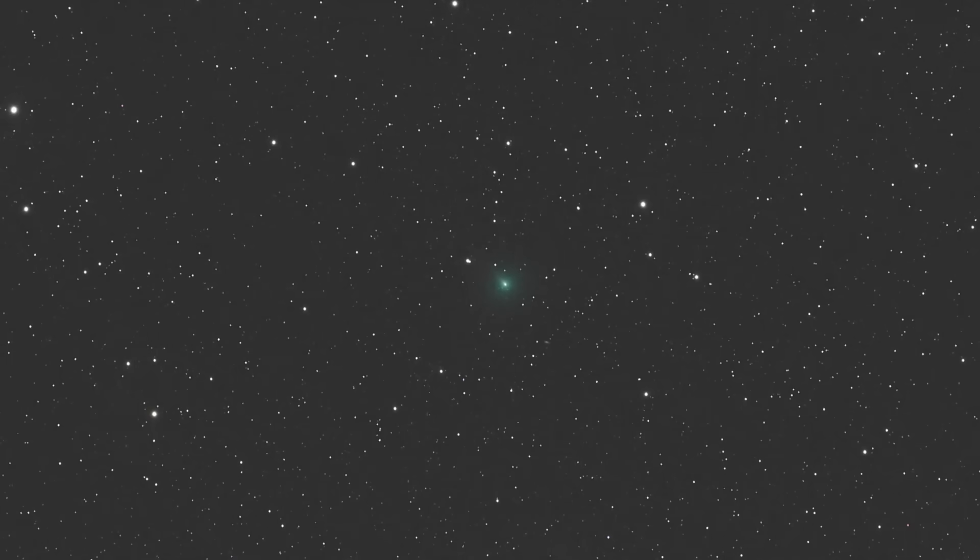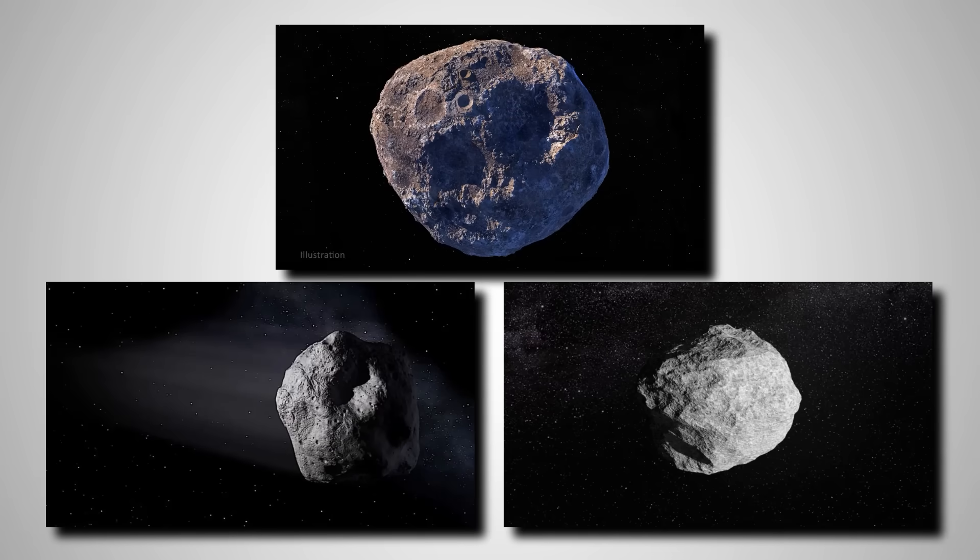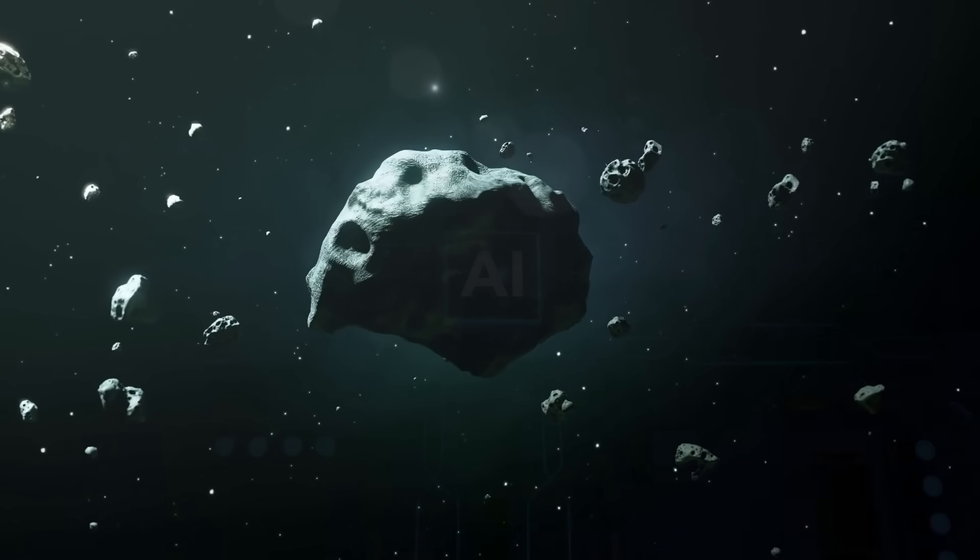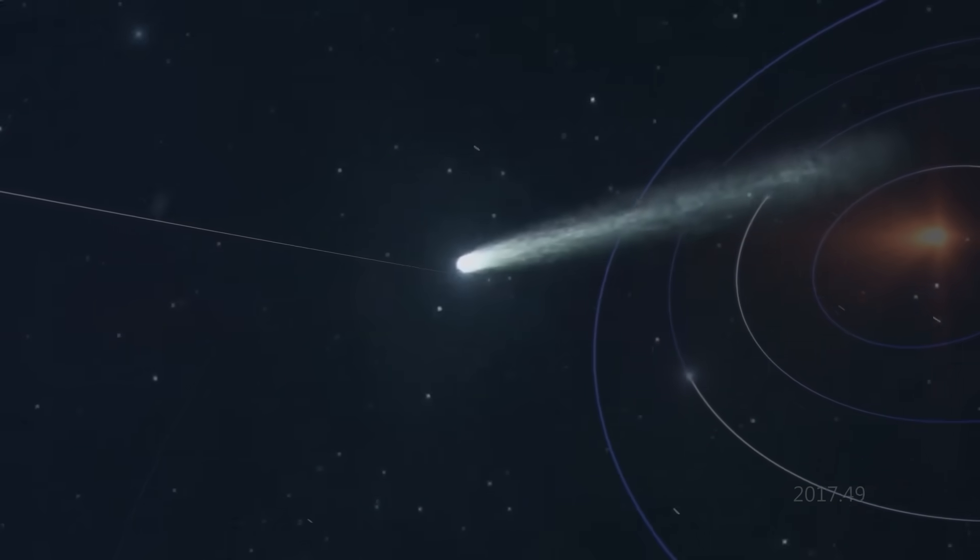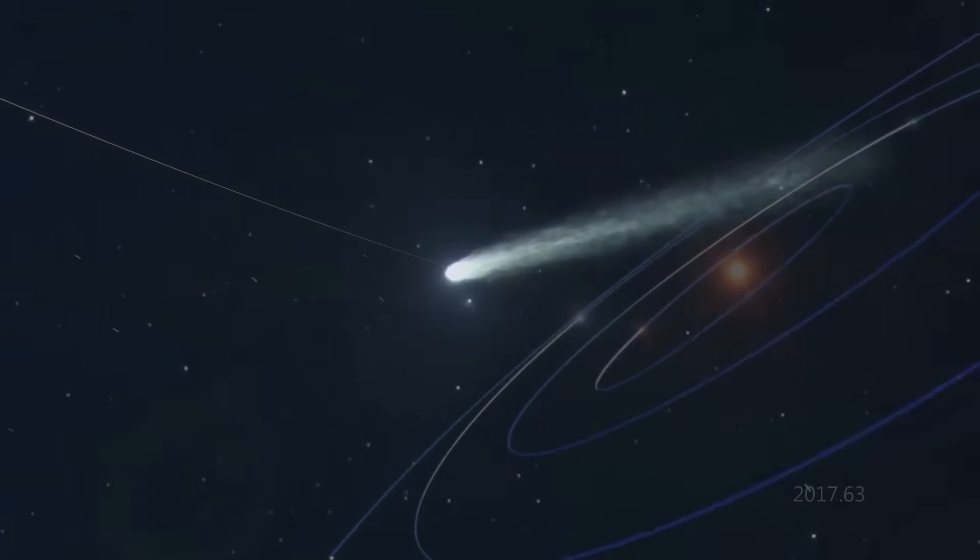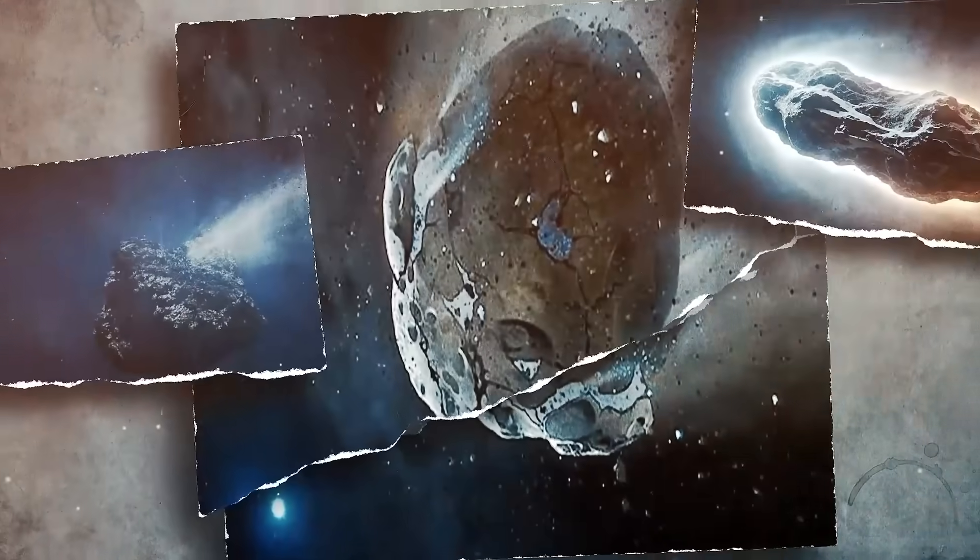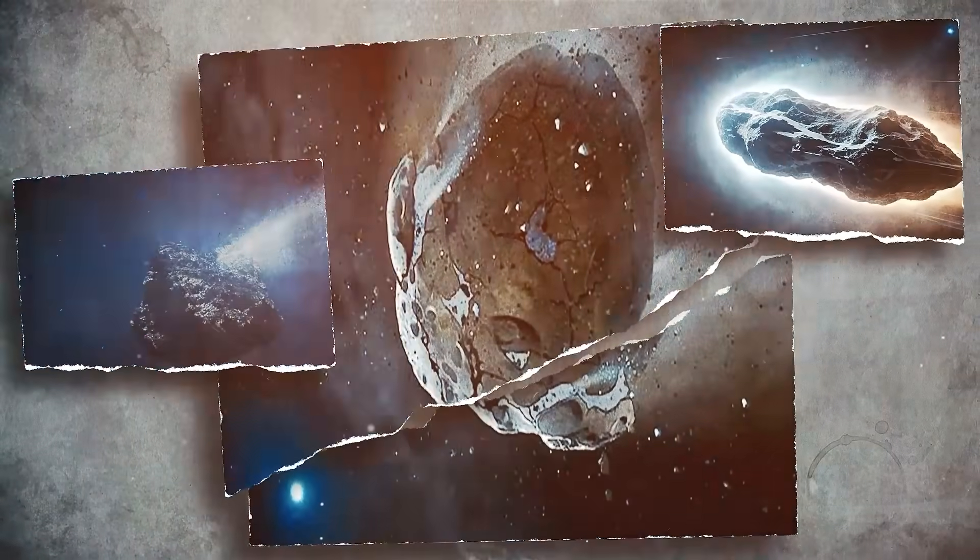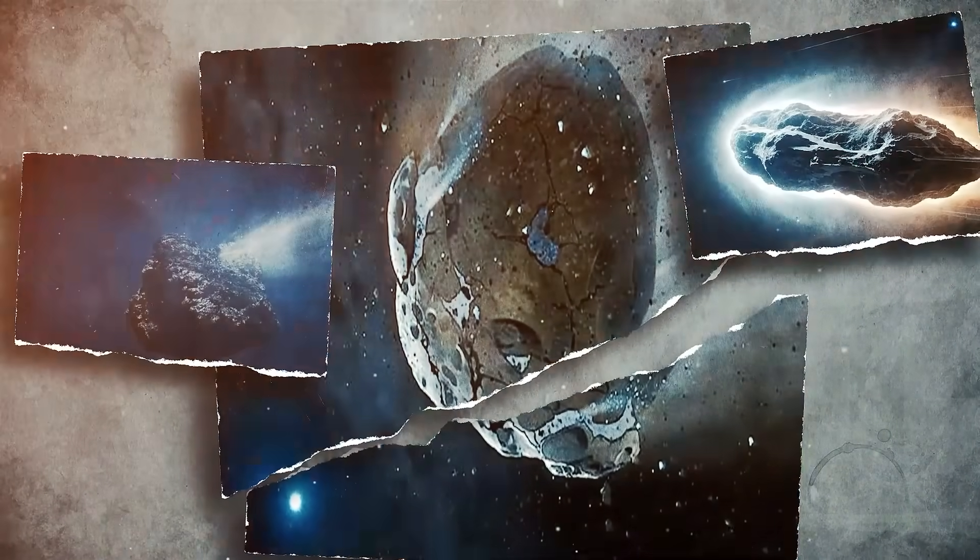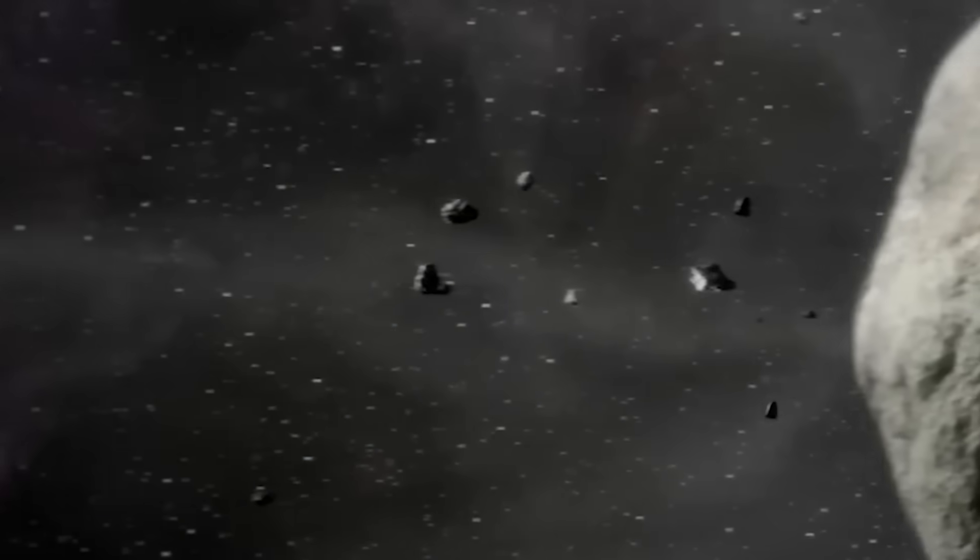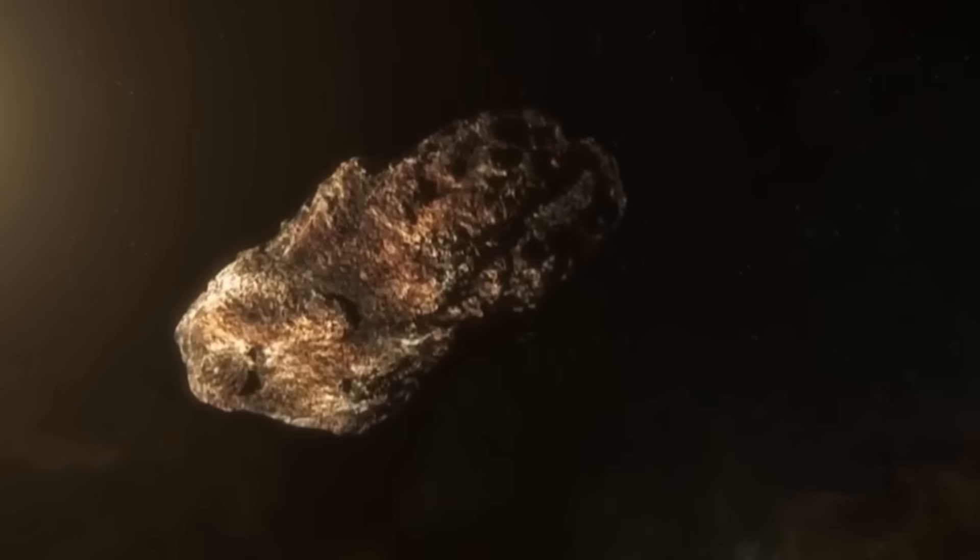The second part of the warning addresses their purpose. These probes are not hostile, at least not directly. They are observational. The AI analysis of their trajectory suggests they are moving into stable, long-term orbits across the entire solar system. Some are heading for the asteroid belt, some for the gas giants, and a handful are adjusting their course for near-Earth orbits. They are spreading out, creating a massive surveillance network. They are designed to watch, to listen, and to learn.